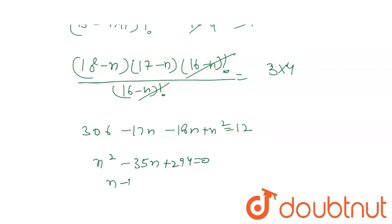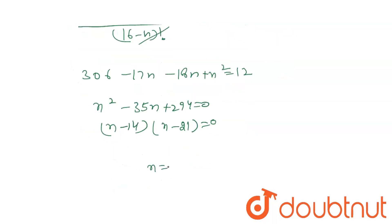Now let's see the factors. So what are the factors? N minus 14 and n minus 21. So what are the values of n? 14 and 21.